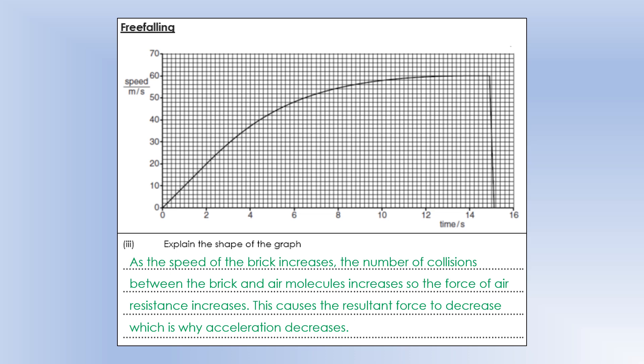So if we think about the situation, we've got the weight force downwards, air resistance upwards, and if air resistance gets bigger, that's going to make the resultant force smaller. And the smaller resultant force gives you smaller acceleration. Okay, so then that's the section where the acceleration is positive but decreasing to zero.